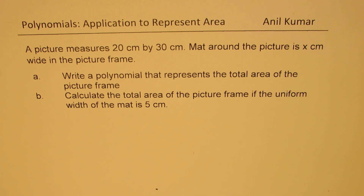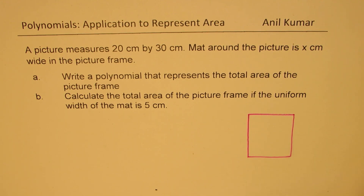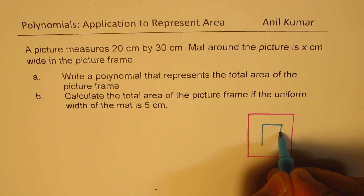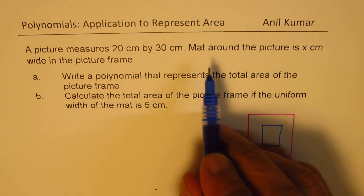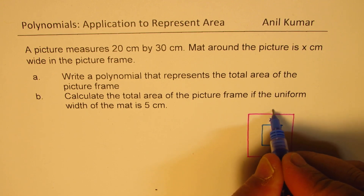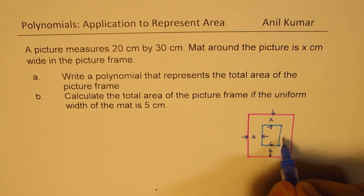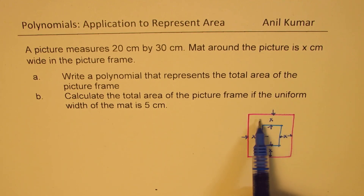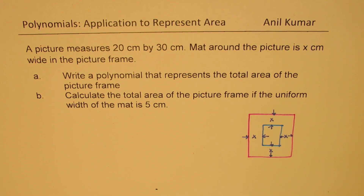Now here we are talking about two things. One is a big picture frame — let me just sketch one like this. This is the frame of the picture, and within it we have a picture with a uniform border. The mat around the picture is x centimeters — x centimeters on this side, and all sides are x centimeters. So that is the mat around the picture shown in the blue box.